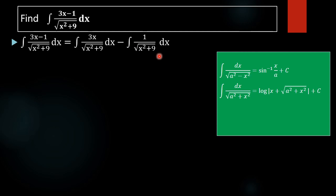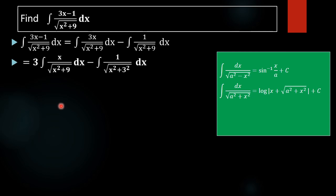In the next step we are taking 3 outside and rewriting 9 as 3 squared. We then get integral of x by square root of x squared plus 9, and the second term becomes integral of 1 by square root of x squared plus 3 squared dx.